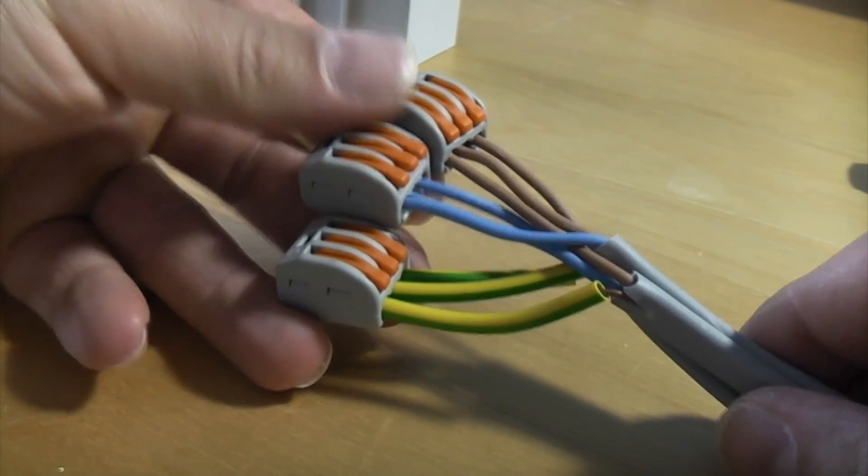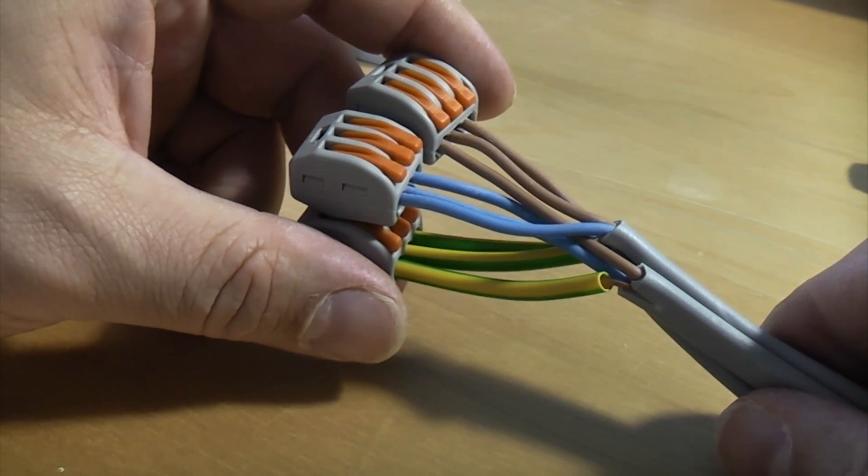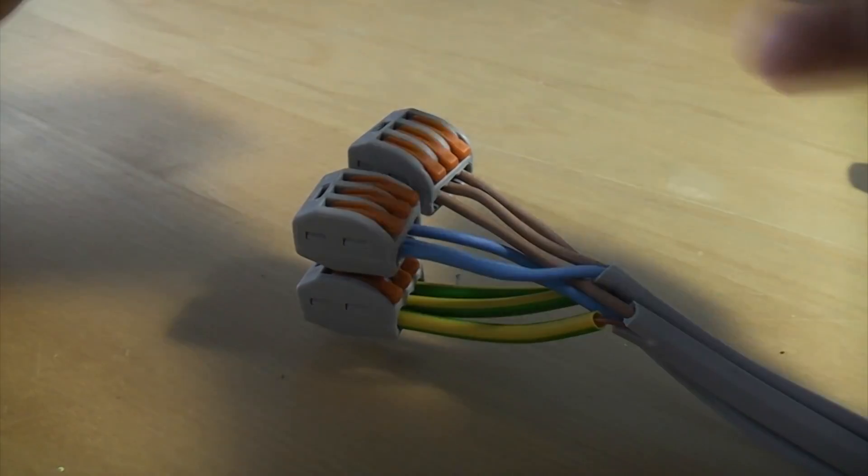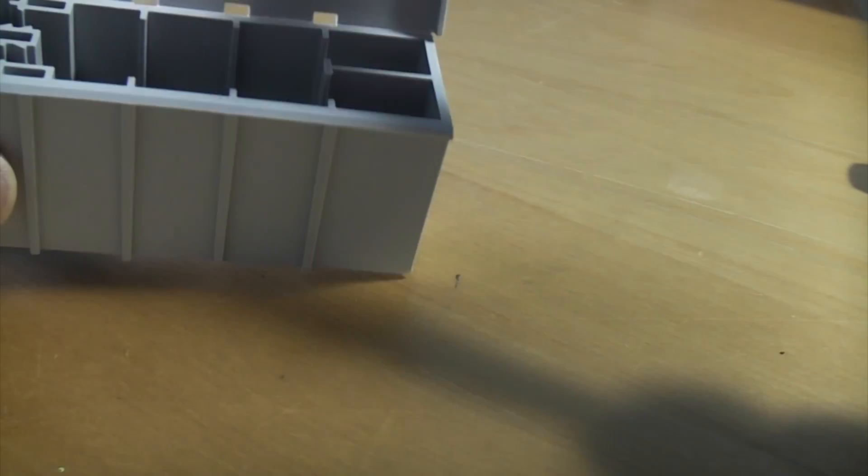Now that we've connected our cables together like that, we need something to put them in, and the guys recently invented a box called the WAGO box, which is designed specifically to hold the WAGO connectors.